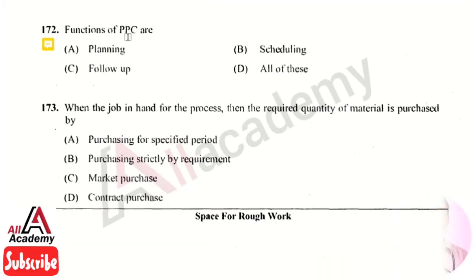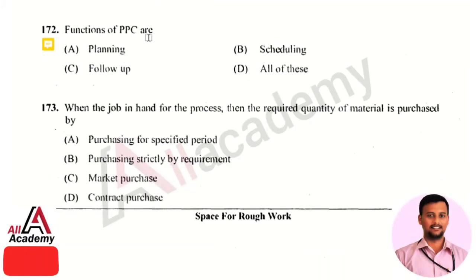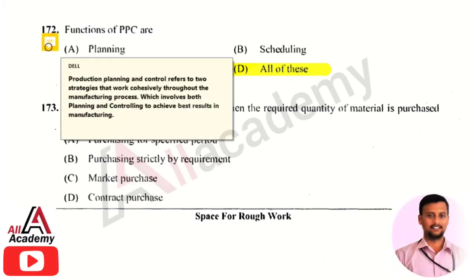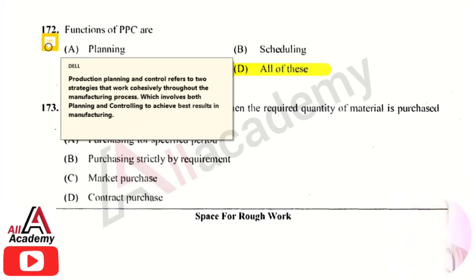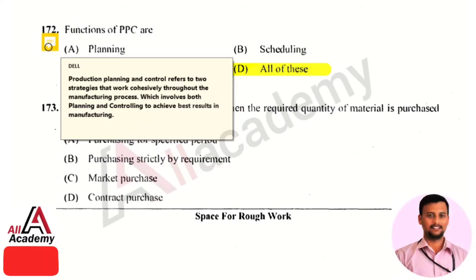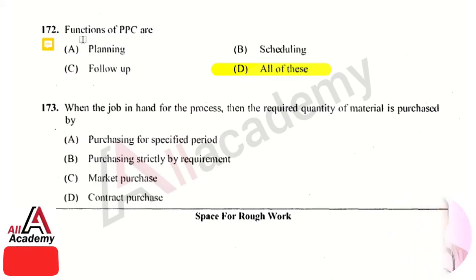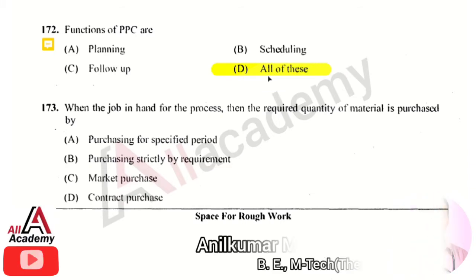The next question is: the functions of PPC are? The right answer is option 4, all of the above. PPC refers to Production Planning and Control. It is a two-strategy system that works cohesively throughout the manufacturing process, involving planning and controlling to achieve the best results. The functions of PPC include planning, scheduling, and follow-up.